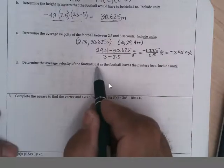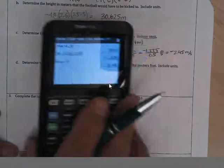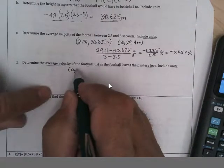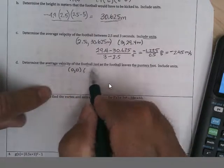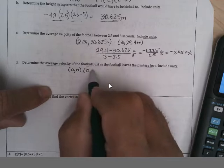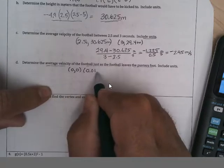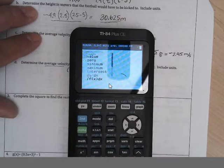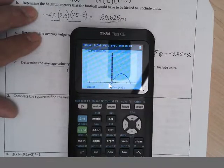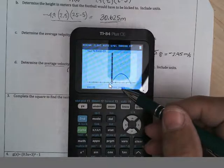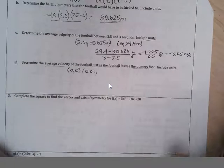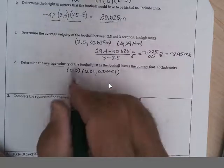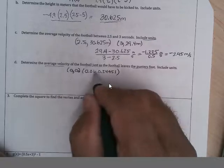Now, to get the average velocity of the football just as it leaves the foot, well, we can figure out the height that's 0. And if you put 0 in there, you get 0. And at just after that, like a lot of you use 0.01. I did also in class. So we can put that into the equation or I can go to the second, calculate the value at 0.01 and it says if I put 0.01 to this equation, I should get 0.24451. So this is the meters. This was seconds. Seconds and meters.